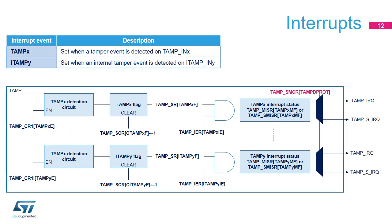All interrupts can wake the processor up from all low-power modes. The detection on all tamper pins and internal tamper sources can generate an interrupt. Any tamper detection circuit can be enabled or disabled by programming the TAMP-CR1 register. If it is enabled and a tamper event is detected, the corresponding flag is set in the TAMP-SR register. The TAMP-IER register masks or enables the tamper event interrupt. The interrupt service routine can easily determine which tamper event has occurred by reading the TAMP-MISR or TAMP-SMISR register, which contains flags identifying the source. MISR is relevant when the interrupt is non-secure; SMISR when it is secure. The TAMP-DPROT bit in the TAMP-SMCR register determines whether the TAMP module asserts the non-secure or the secure interrupt request to the NVIC.